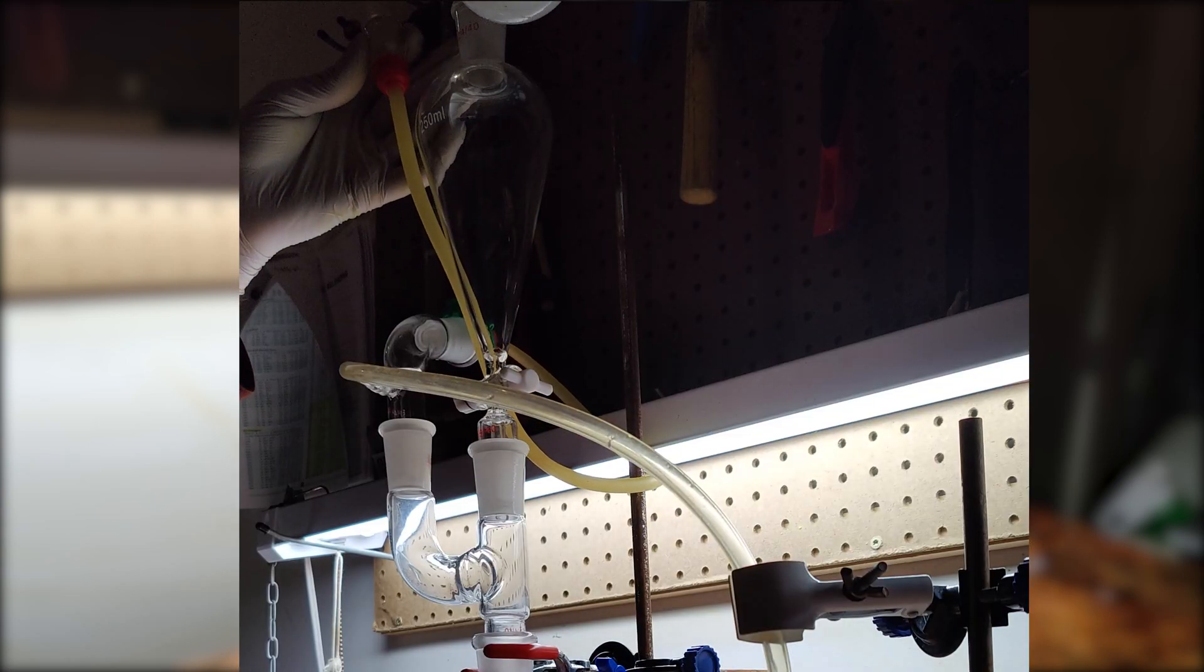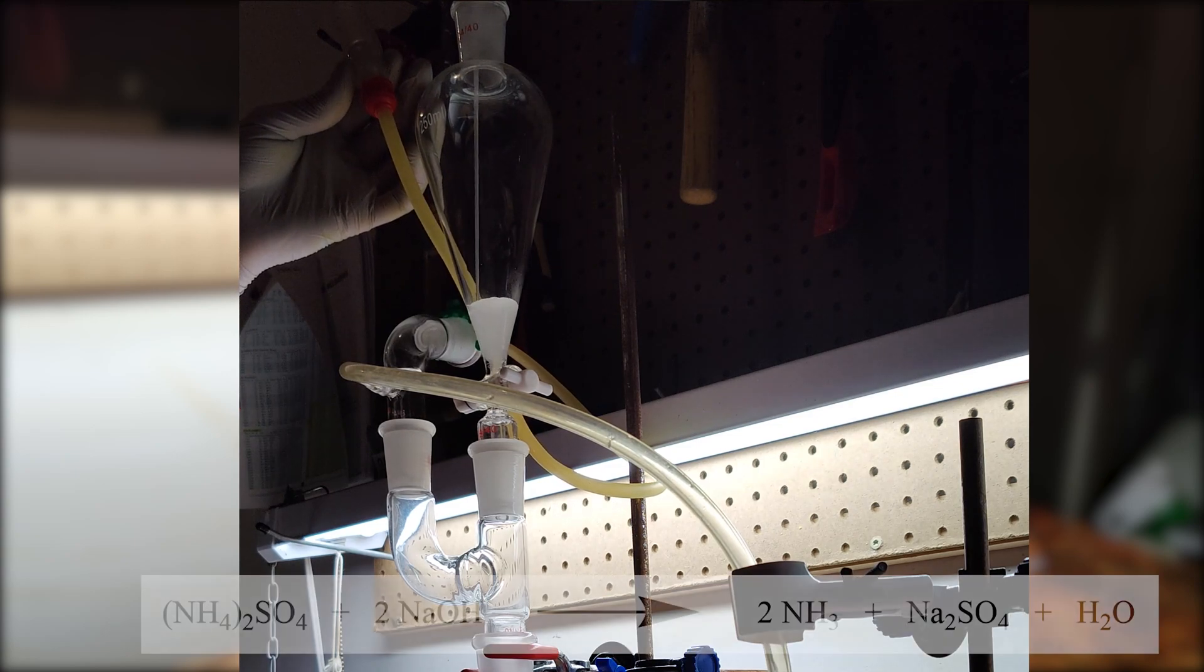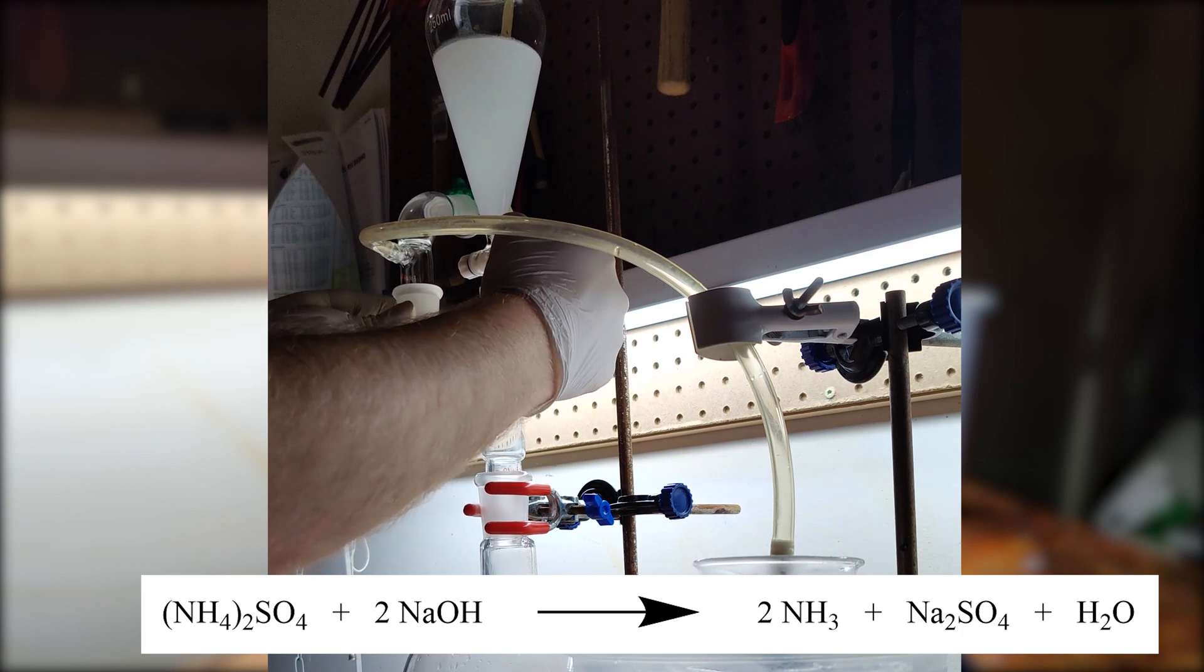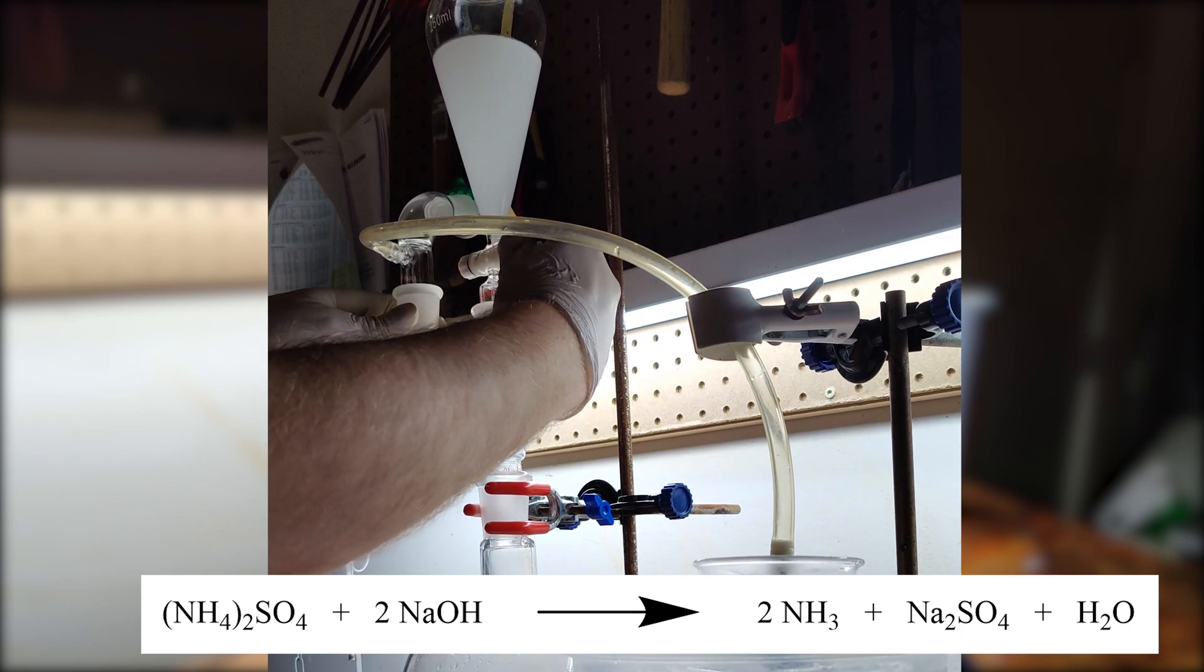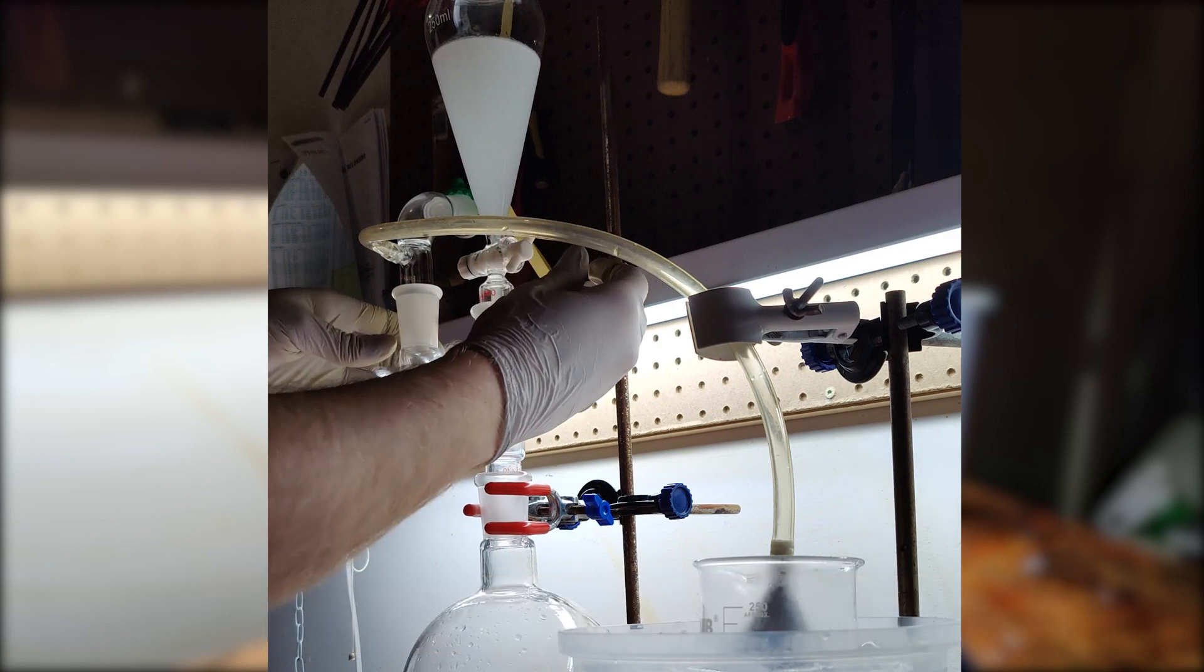I'd then make a solution out of the sodium hydroxide and add it to my separatory funnel. The goal here is to add the sodium hydroxide in a slow, controlled manner. Producing too much ammonia gas at once can cause significant and rapid changes in temperature, which can have unpredictable consequences, including a higher risk for suckback.